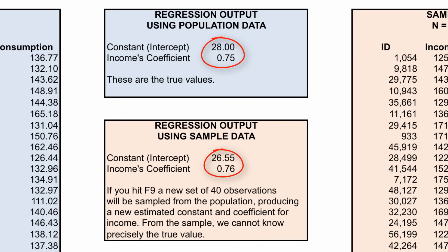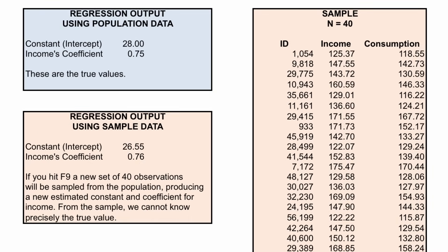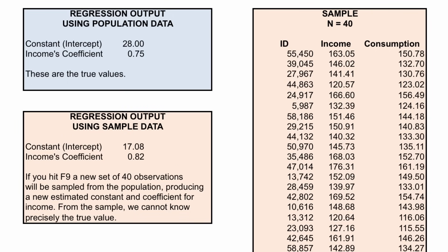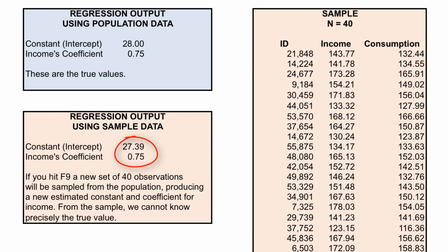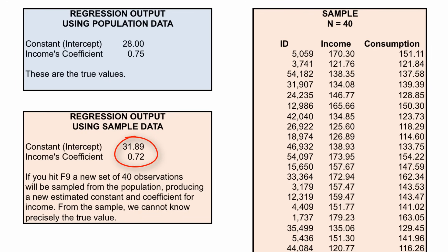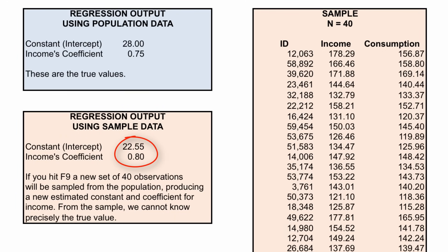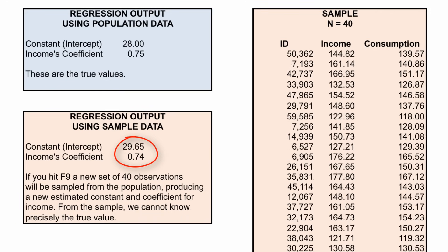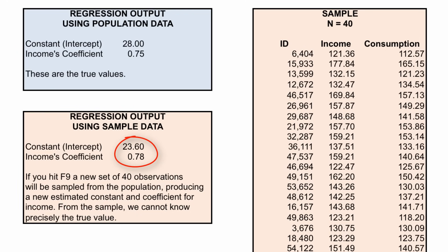But what would happen if we chose a different random sample? With 40 different observations, the coefficients change: now the intercept is 17.08 and the coefficient for income is 0.82 — very different from before. With yet another sample we nail income's coefficient at 0.75, but with another we go farther apart. We see values of 0.72, 0.80, 0.67 — it is very random. We could continue drawing random samples and keep obtaining different numbers.